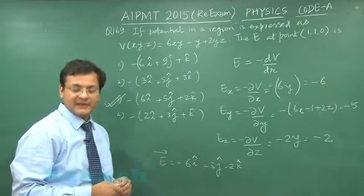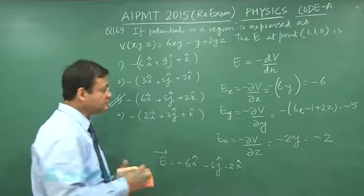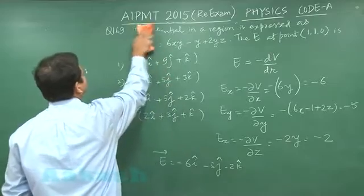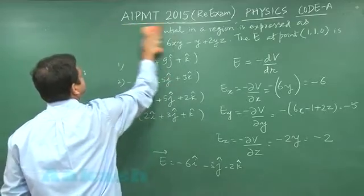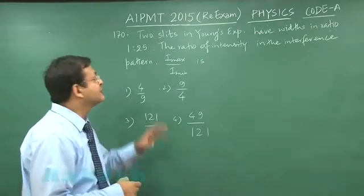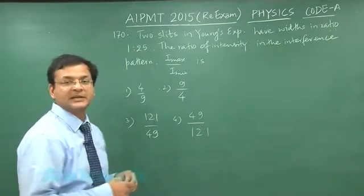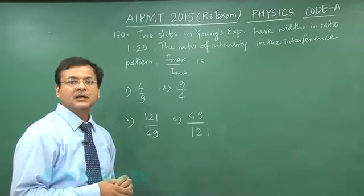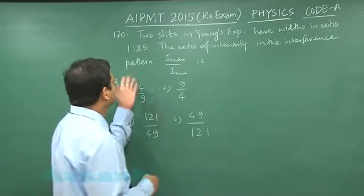Now this is a question of Young's double slit experiment in which the slit width ratio has been given, and this is basically the ratio of square of amplitude. So here you can say...